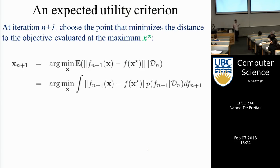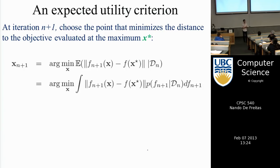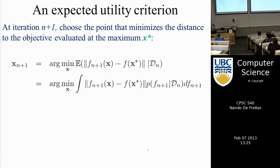Expected utility is not just intuition — it's the conclusion of a theorem. If agents have basic conditions on their preferences (like if you prefer A to B and B to C, you should prefer A to C), from about five axioms you can mathematically derive the principle of expected utility. This was done by von Neumann and Morgenstern in the 1950s and was the beginning of game theory. In game theory, maximum expected utility is what's called best response — the action you take to converge to a Nash equilibrium.